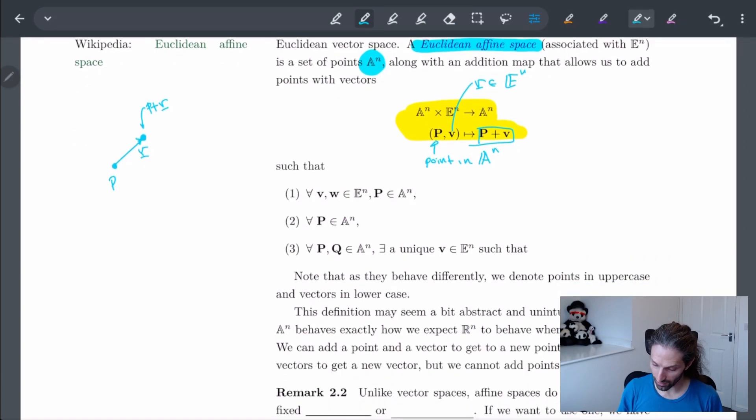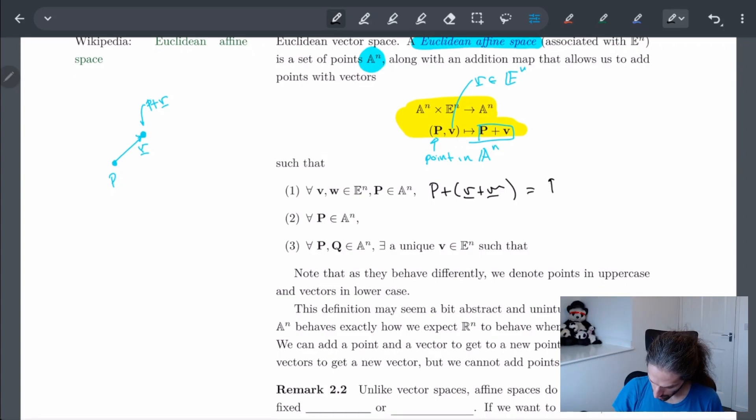So there's three kind of conditions that we want here. For every vector V and W, and for every point P, what we want is that it shouldn't matter if I add the two vectors and then I move the point P, or if I do one vector and then another vector. V plus V plus W. So it shouldn't matter where these parentheses are, or these brackets are.